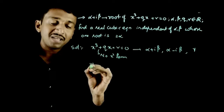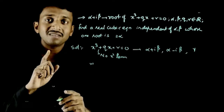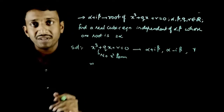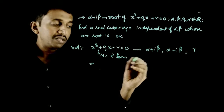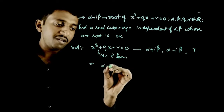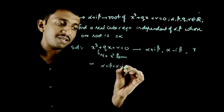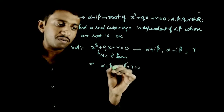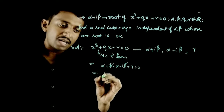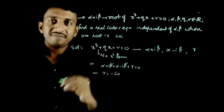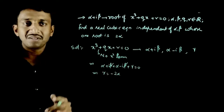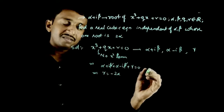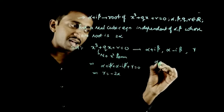Since there is no x² term, the sum of the roots equals 0. So alpha + i*beta plus alpha minus i*beta plus gamma equals 0, which gives gamma equals minus 2*alpha. The third root of this equation is minus 2*alpha.